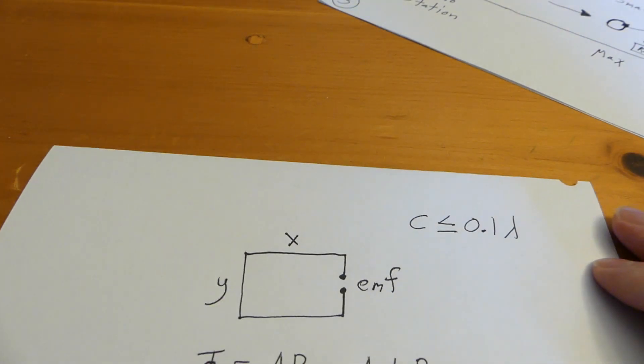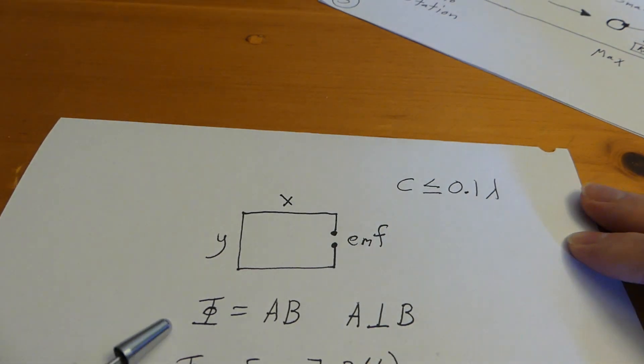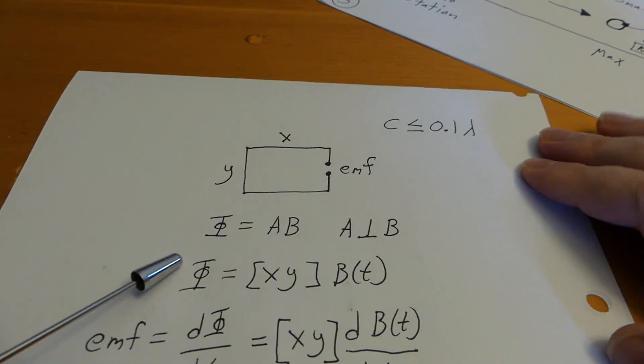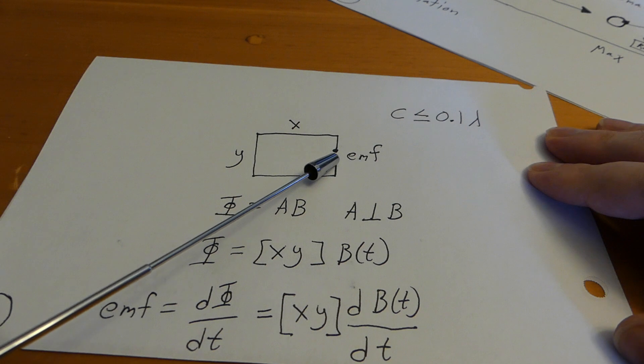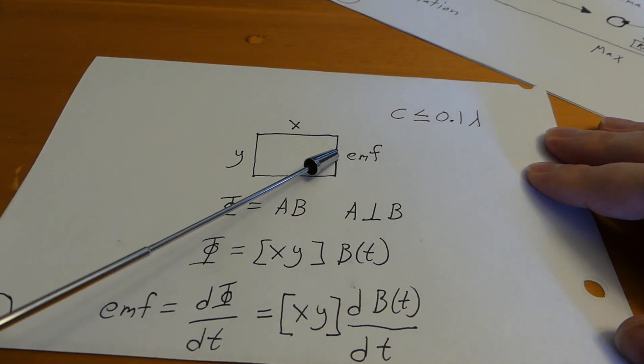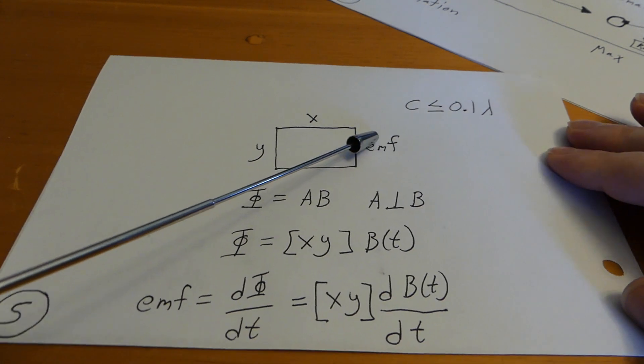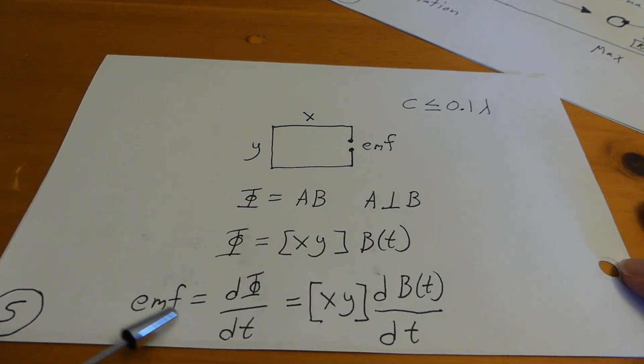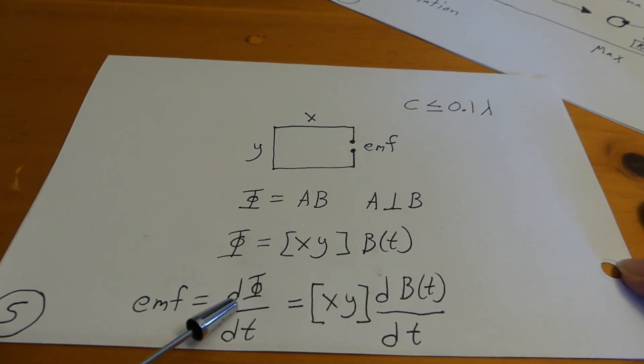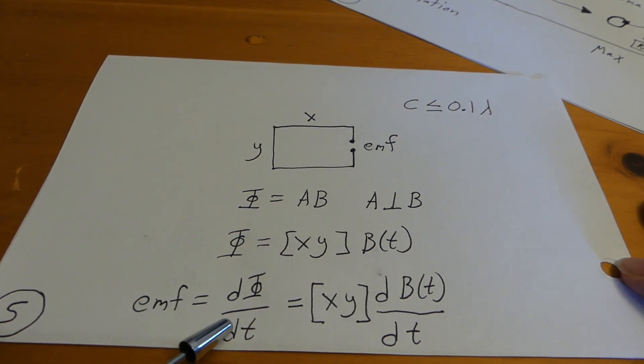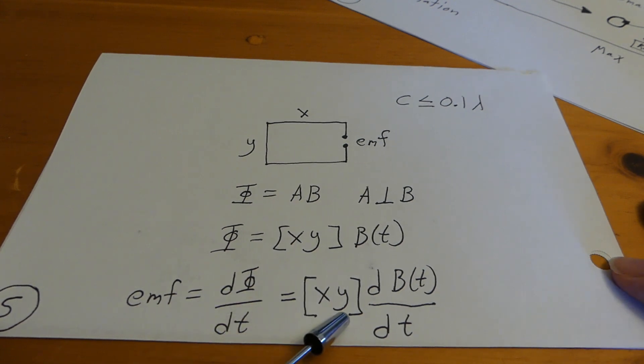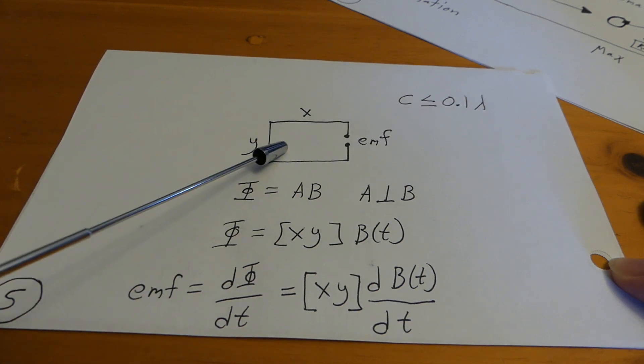Alright. So, hopefully you guys are getting that. So, again, this is our loop. This is the flux equation. This is in details. Now, the voltage or the EMF induced at those two terminals, okay, is going to be equal to essentially the derivative of the magnetic flux with respect to time. So, we can see that we are going to get more voltage or more signal when the area of this loop is bigger.